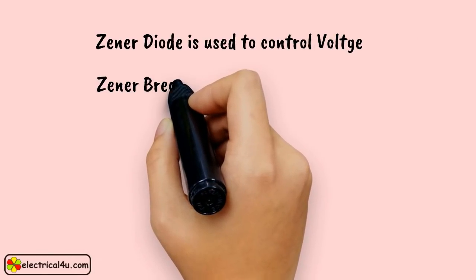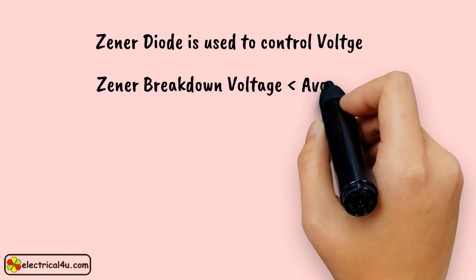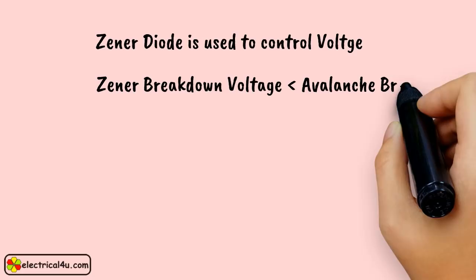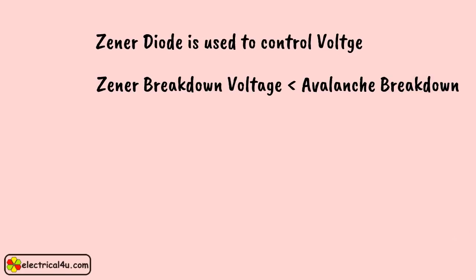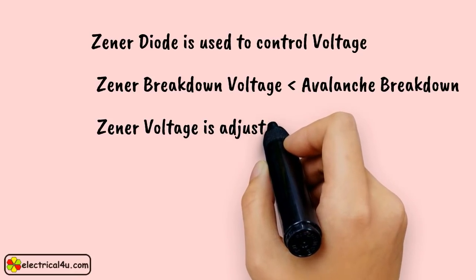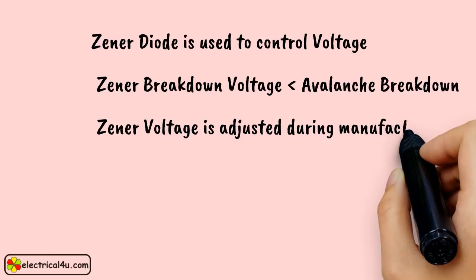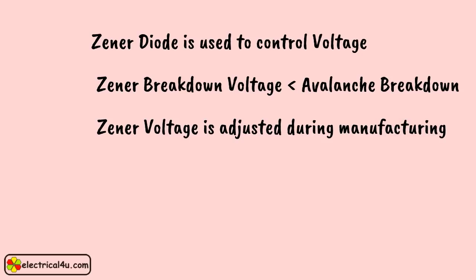Theoretically, Zener breakdown occurs at a lower voltage level than avalanche breakdown in a diode which is specially doped for Zener breakdown. The Zener voltage of a diode can be adjusted during manufacturing with the help of required and proper doping. This is how a Zener diode works, and we also come to know why a reverse biased normal diode cannot be suitably used as a Zener diode, and why Zener diodes are specially doped diodes.